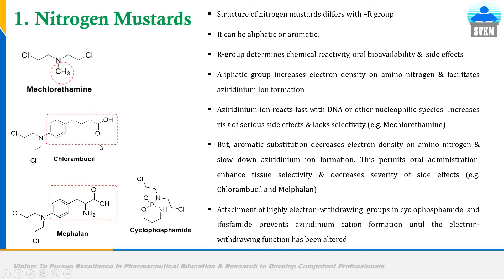For support of this point, we can take the examples of chlorambucil and melphalan. Both drugs contain aromatic substitution, and with aromatic substitution the aziridinium ion formation is slowed down. This slow formation of aziridinium ion allowed us to give these drugs by the oral route. In the case of cyclophosphamide, the attachment of a highly electron-withdrawing group prevents aziridinium ion formation until the electron-withdrawing function has been altered.